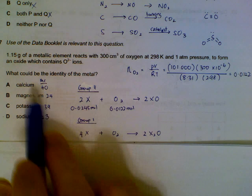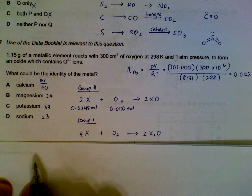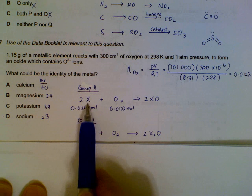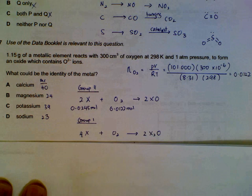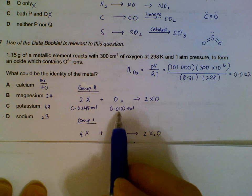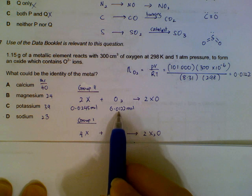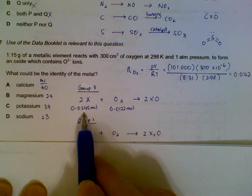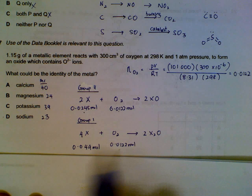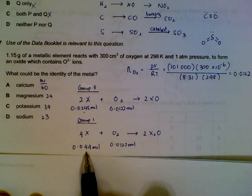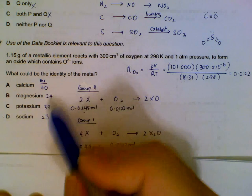Then we need to find out how many moles of metal will be involved. There are two possible equations. For Group 2, we have this equation. For Group 1, we have this equation. So assuming it's Group 2, with this number of moles of oxygen, we will have twice the moles of the metal, Group 2 metal. If it's Group 1, we will have 4 times the moles of the metal.